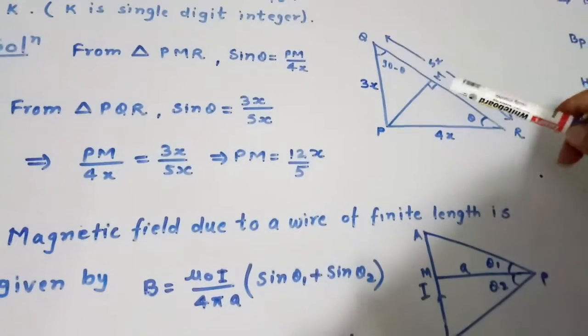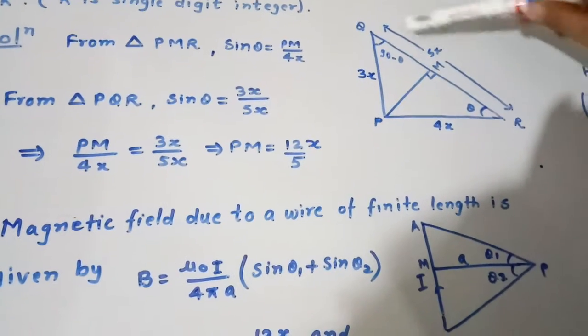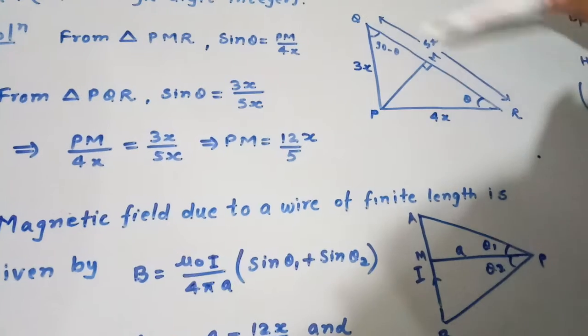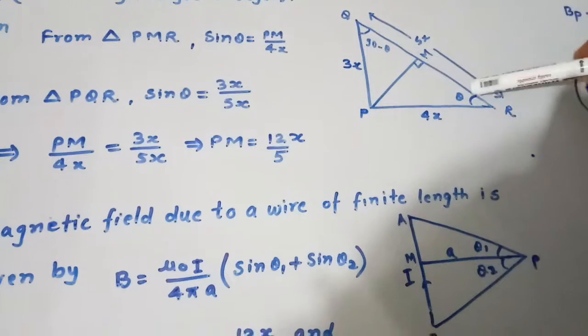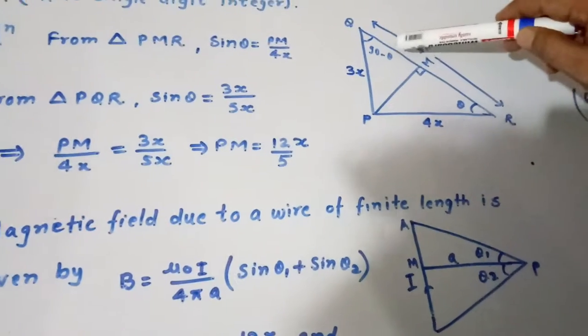Suppose we consider the wire QR and this is the point P where magnetic field is to be found. So here θ₁ is θ and θ₂ is 90 minus θ.